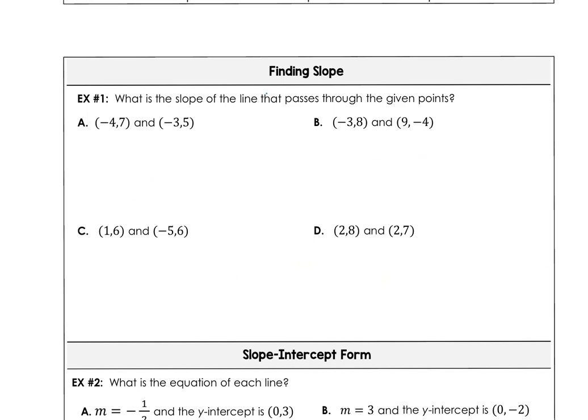So jumping right into the lesson, we want to know what is the slope of the line that passes through the given points. Using the slope formula, which is y2 minus y1 divided by x2 minus x1, we'll find that the slope is negative 2 divided by positive 1. So our slope is negative 2.